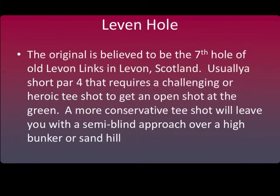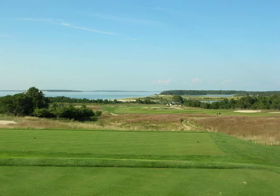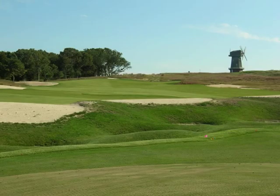The original 11 hole was believed to be the 7th at Levin Links Golf Club in Scotland. The hole is a short par 4 that requires a heroic type of tee shot to an area in the fairway that will provide an open look to the green. A safer route will result in a second shot that is either blind or semi-blind. The 17th at National Golf Links is an example of an 11 hole — a rather short hole that requires a heroic tee shot to carry to the flat open area of the fairway, while a safer route will leave a semi-blind shot. The green is located behind the sand hill.